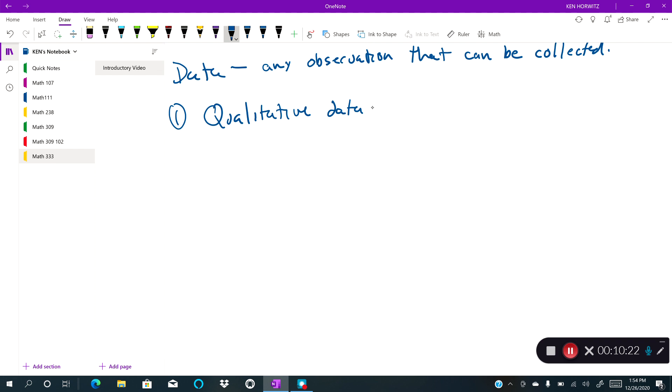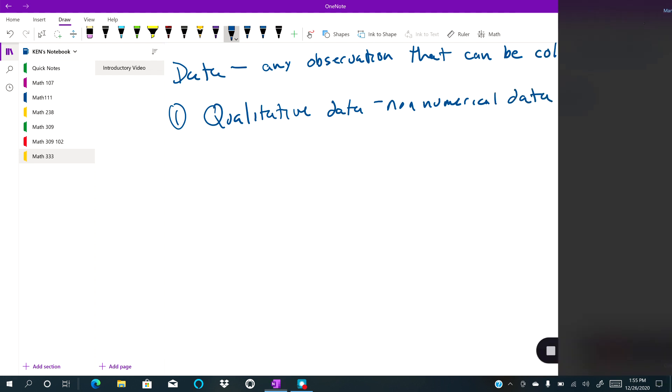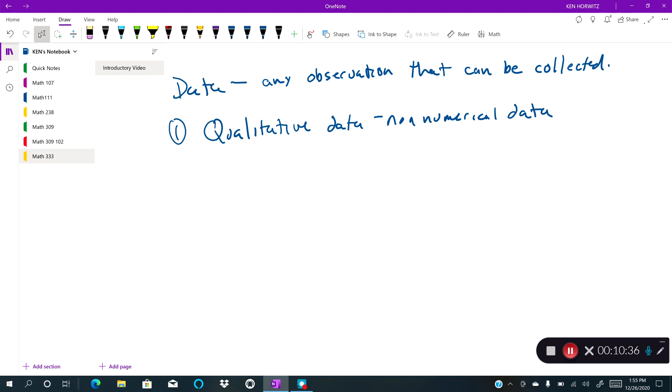And qualitative data is non-numerical data. Very often, qualitative data is integral in any study. It could be anything. It could be things like data on religion, eye color, hair color, certain characteristics or aspects of people. Anything non-numerical.